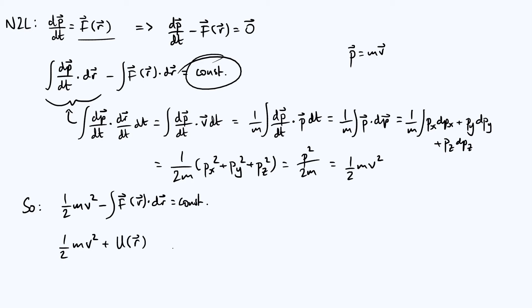Where we have defined U(r), it's a scalar function, to be minus the integral of f(r) dotted with dr.